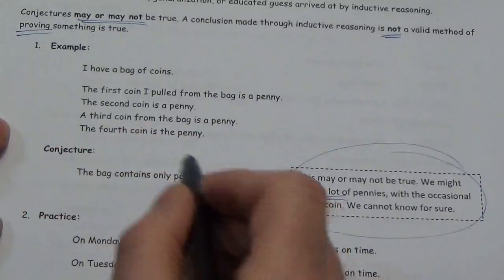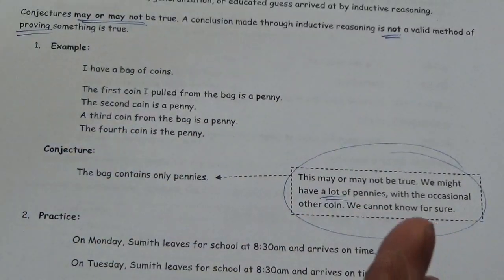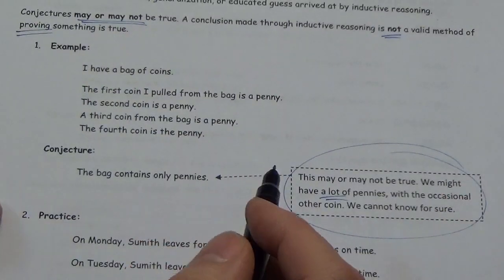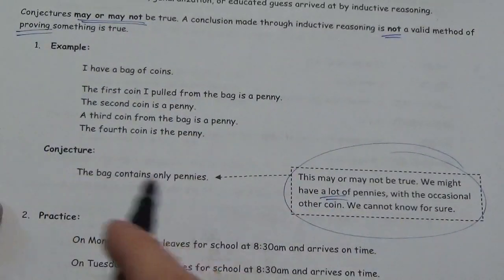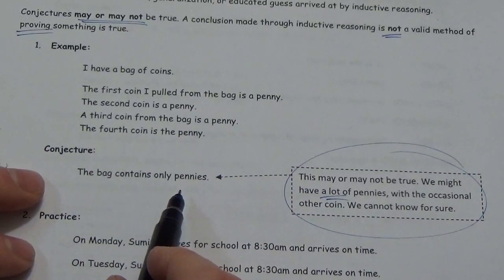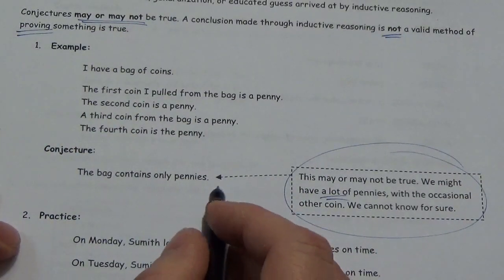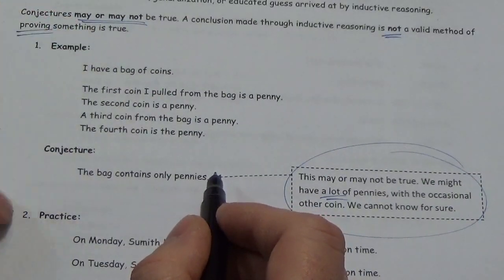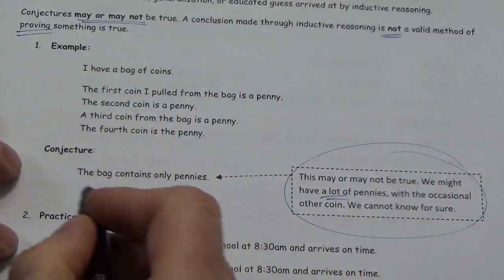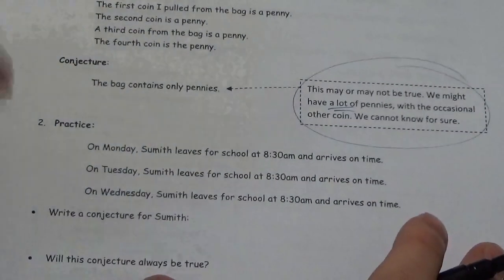This is where we make guesses about what's going on in the world we see around us. And then, we use other forms of reasoning to try to verify whether this is actually true or not. Now by the way, it may be that that bag does contain only pennies. That could be the case. It just might not be. We don't know. But we use inductive reasoning to get an idea and then we test that idea using other forms. Let's take a look at another example here.